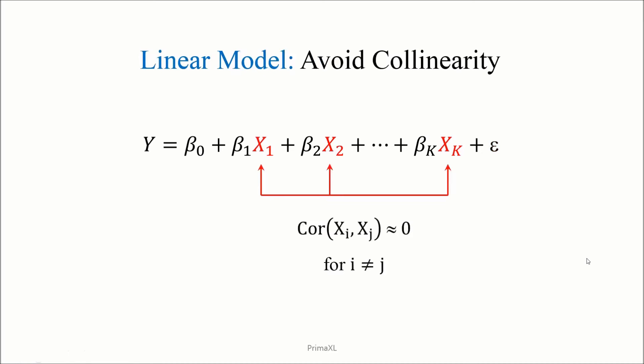The x variables should avoid the so-called collinearity. It means that the correlations among themselves should be as close to 0 as possible. We want to avoid the collinearity because it may cause the problem of variance inflation of the coefficients.